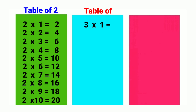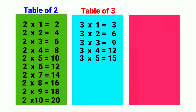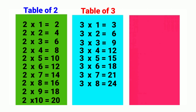3, 1's are 3. 3, 2's are 6. 3, 3's are 9. 3, 4's are 12. 3, 5's are 15. 3, 6's are 18. 3, 7's are 21. 3, 8's are 24. 3, 9's are 27. 3, 10's are 30.